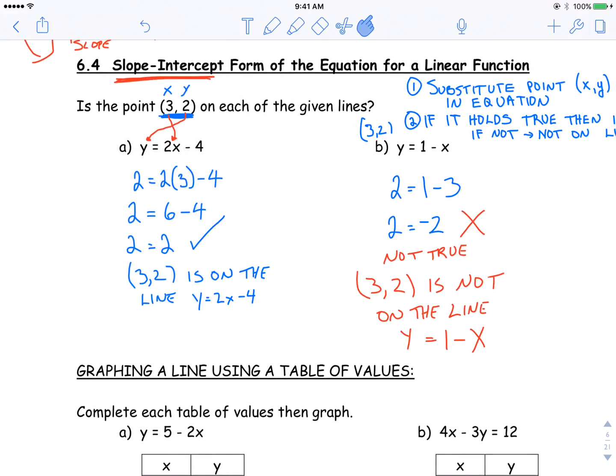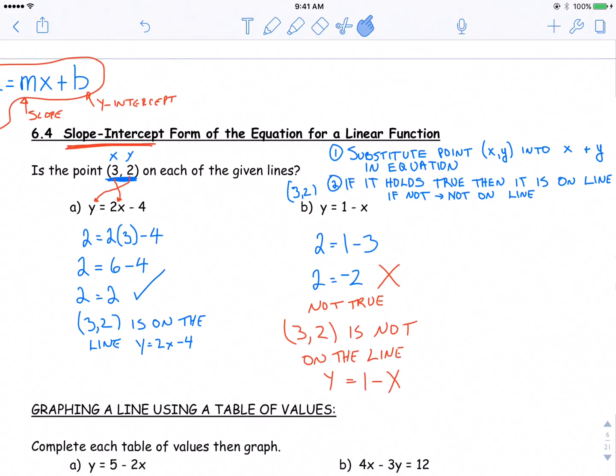Testing to see if a point falls on a line: Take that point, substitute it into the equation, see if it holds true. If it holds true, it's on the line. If it doesn't hold true, it's not on the line.